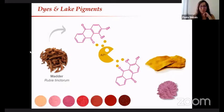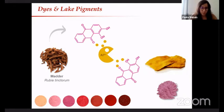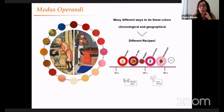Continuing with the presentation by Maria - these natural dyes, the beautiful thing about them is that depending on the formulations, they can have such a wide variety of colors. As we can see here, just from the same source we can obtain all of these beautiful pinks and reds. Because there are many different ways to produce these colors, they're both chronologically and geographically specific, meaning we have different recipes depending on the time and place that they were prepared.